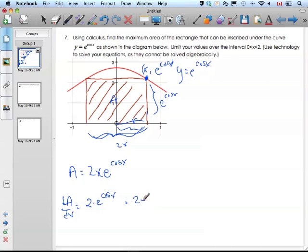plus the second times the derivative of the first. Using chain rule, that's negative sine of x.